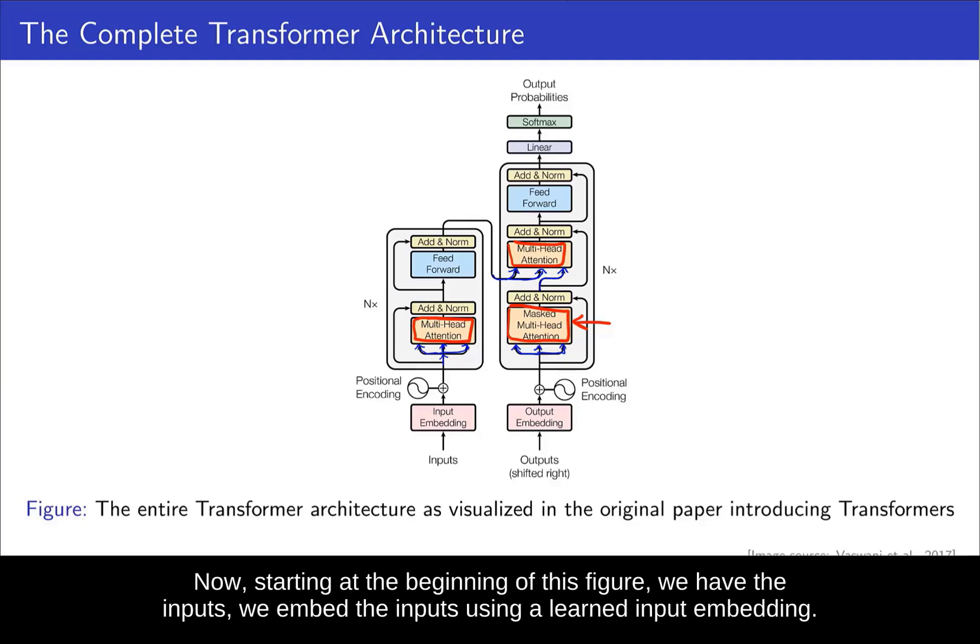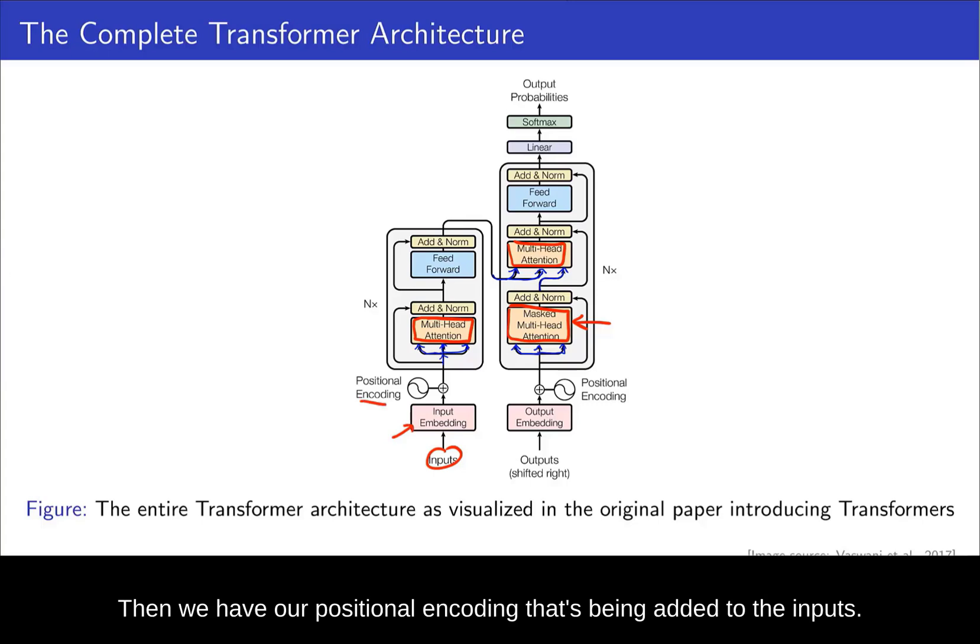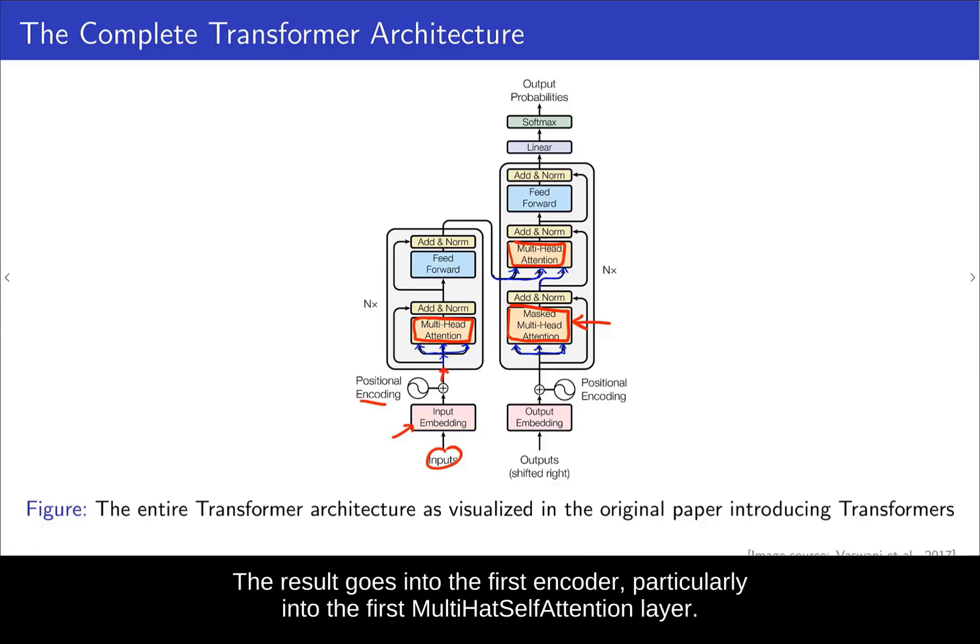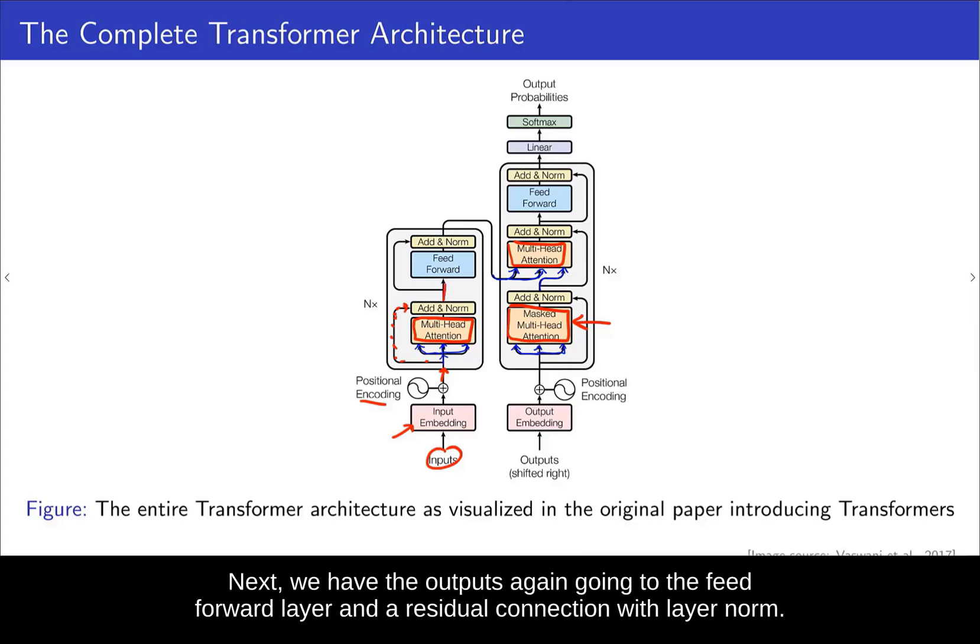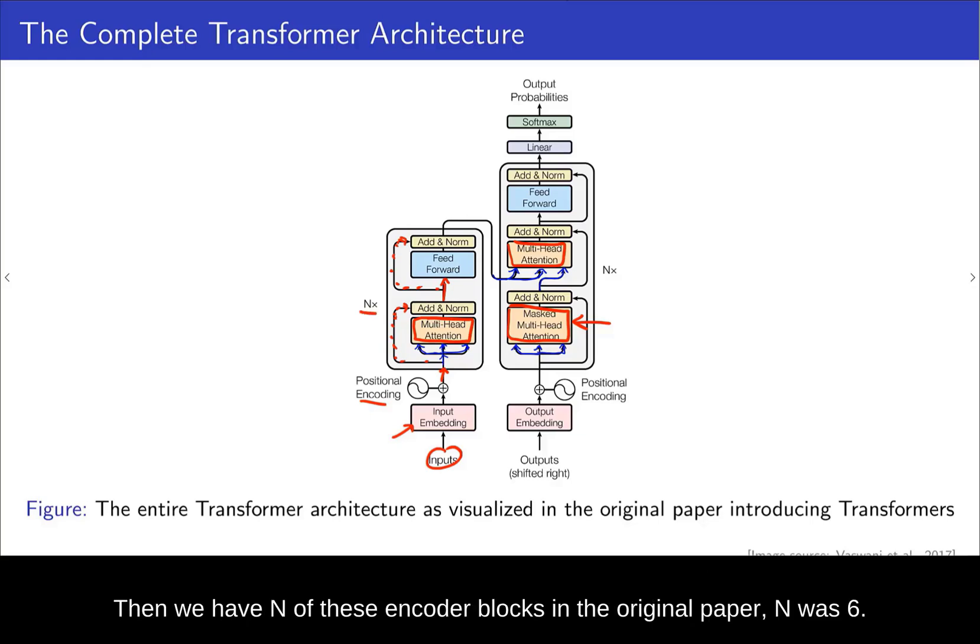Now starting at the beginning of this figure, we have the inputs. We embed the inputs using a learned input embedding. Then we have our positional encoding that's being added to the inputs. The result goes into the first encoder, particularly into the first multi-head self-attention layer. Then we have these residual connections and layer norm. Next, we have the outputs again going to the feedforward layer and a residual connection with layer norm. Then we have n of these encoder blocks. In the original paper, n was 6.